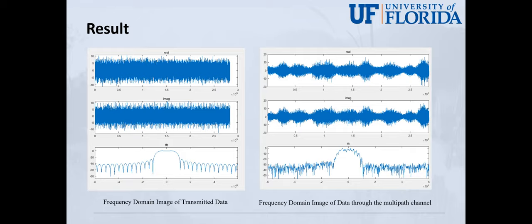Let's see the results of my program. The first figure shows the transmitted data in frequency domain image. We can see that the signal transmitted is orthogonal and there is not much noise. The second figure shows the data passed through the multipath channel. Obviously, it contains many noises compared with the first figure.